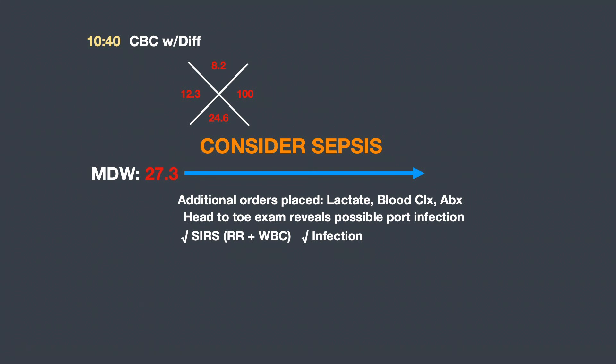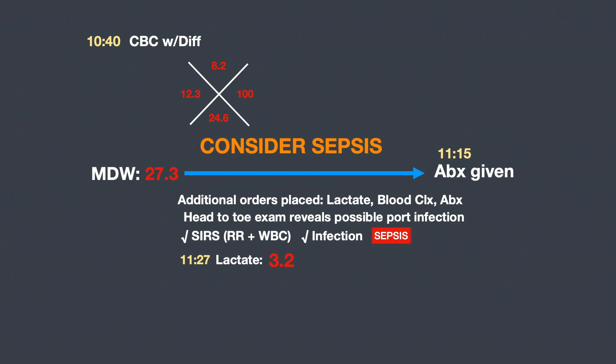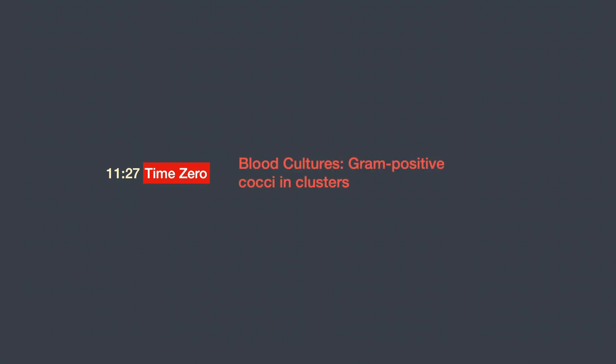At that time, SIRS criteria are met. Recall that the patient's respiratory rate was mildly elevated, and the white count is also elevated at greater than 12 — specifically 12.3. Based on the exam, there is a possibility of infection, likely a port site infection. By SEP-1 definitions, this constitutes sepsis. Antibiotics were given at 11:15. At 11:27, lactate came back elevated at 3.2 — a lactate between 2 and less than 4 in a patient with sepsis is determined as time zero for severe sepsis. So 11:27 is time zero for severe sepsis. The patient was eventually admitted and blood cultures days later came back gram-positive cocci in clusters.